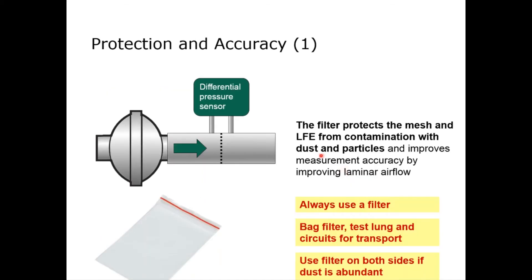Looking at the PF300 and also a little bit about the Citrix, it is super important to always use a filter. The filter protects the mesh, which is a high precision measurement mesh, from any kinds of dust or impurities of the air. Also, when the filter is transported, for example by a service technician, it should always be put in a bag so that it does not acquire dust inside on either end, which would then be blown by the first little bit of flow into the PF300.